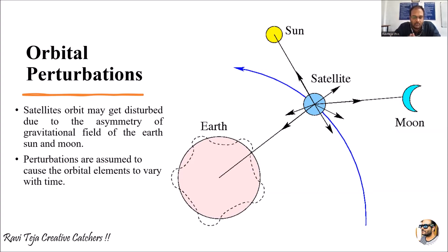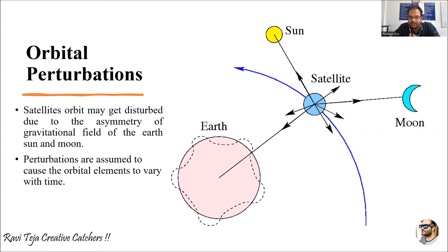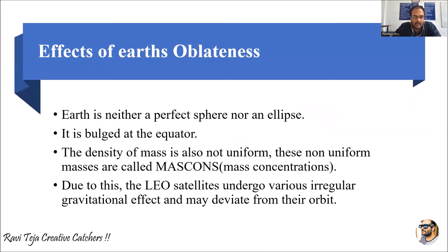Perturbations are assumed to cause the orbital elements to vary with time. Whatever is moving in the orbital space — the satellites we consider as orbital elements — due to the gravitational force of the Earth and the disturbance caused by the Sun and Moon, these perturbations of the orbital elements will also vary with time. There will be a gravitational force applied on the satellites moving in orbit, which is due to the Earth, Sun, and Moon, and these perturbations will be varying with respect to time.